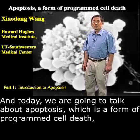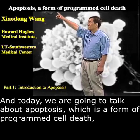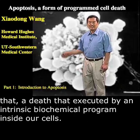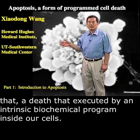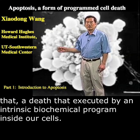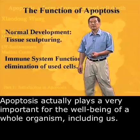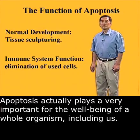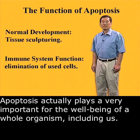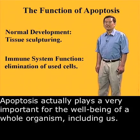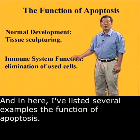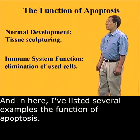Today we are going to talk about apoptosis, which is a form of programmed cell death — a death that is executed by an intrinsic biochemical program inside our cells. Apoptosis plays a very important role for the well-being of a whole organism, including us. Here I list several examples of the function of apoptosis.